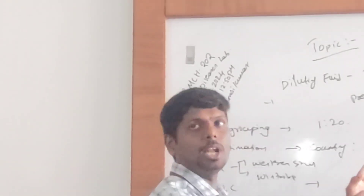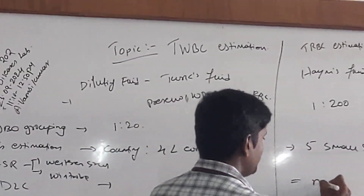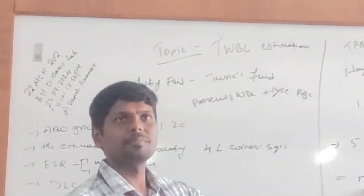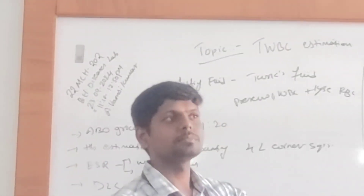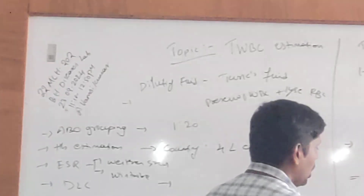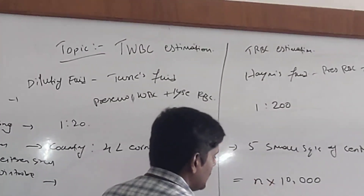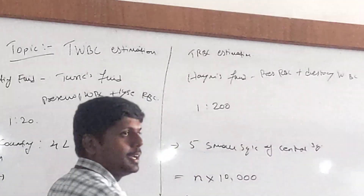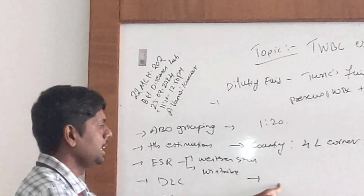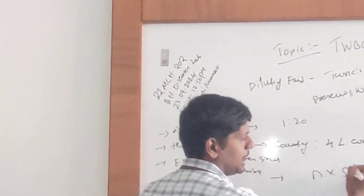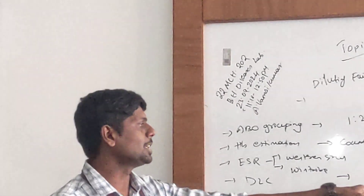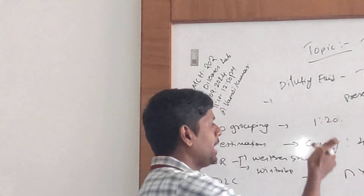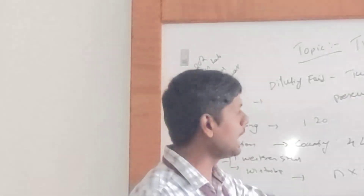A simplified formula: for RBC, N × 10,000 — where N is the sum of RBCs in all 5 squares. For WBC estimation, the formula is N × 50, considering depth, area, volume, and dilution factor.